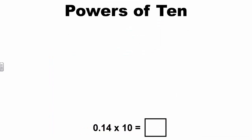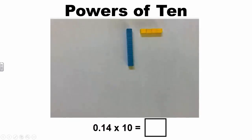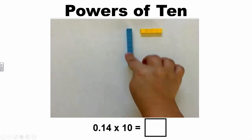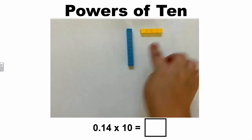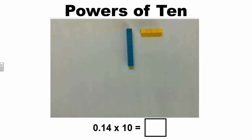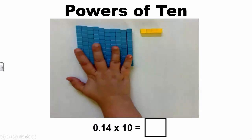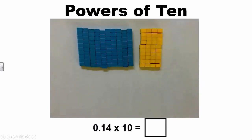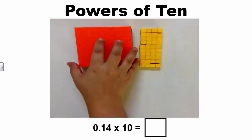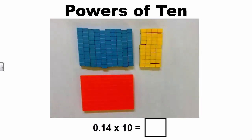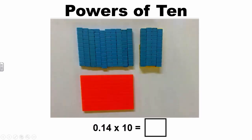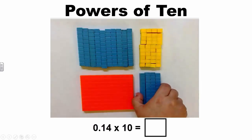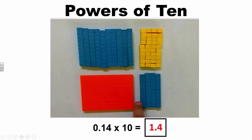Let's model the following problem with base 10 blocks. We can represent the number 14 hundredths using one rod and four unit cubes, where the rod represents one-tenth and the four unit cubes represent four-hundredths. To multiply the number 14 hundredths by 10, we need to multiply each digit by 10 — one-tenth times 10 and four-hundredths times 10. We can see that ten-tenths is equivalent to one whole, and four-hundredths times 10 is equal to four-tenths. Therefore, 14 hundredths times 10 is equal to one and four-tenths.